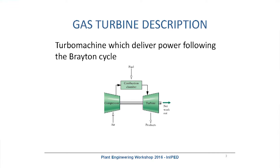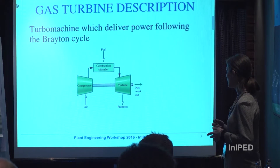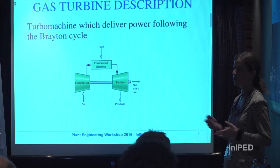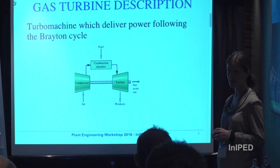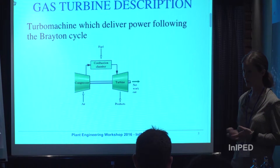A gas turbine is a turbo machine which delivers power following the Brayton cycle. Air enters the air compressor, is compressed and mixed with fuel gas that burns in the combustion chamber, releasing gases at high temperature and pressure. These gases enter the turbine, delivering output power to drive centrifugal compressors, electrical generators, aircraft, and ships. Generally, a gas turbine has an efficiency around 32%, though this value depends on the type, manufacturer, and model.